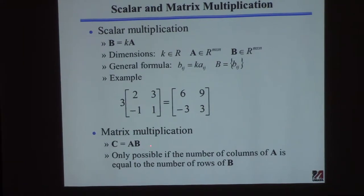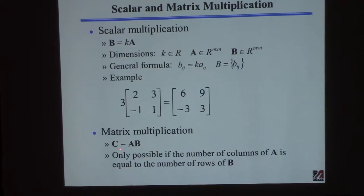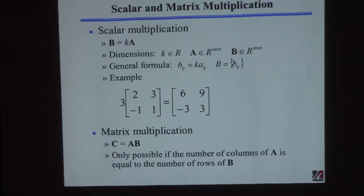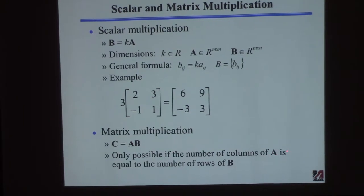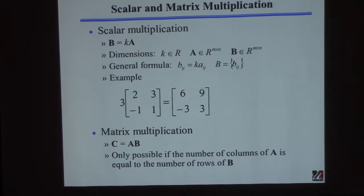This will determine certain operations, whether you can perform them or not. In particular, let's say we want to multiply two matrices. So I have matrix A and matrix B and I want to multiply them to get matrix C. This is only going to be defined if the number of columns of A is the same as the number of rows of B. That's weird, but when you see the definition, it'll make sense.